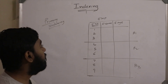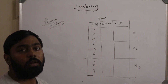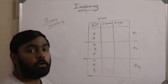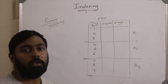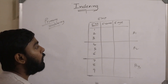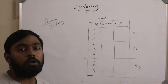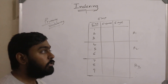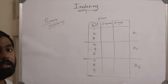In the first video we have seen that indexing can be applied on any key, like a primary key, a candidate key, or a non-key. We also know that a data file can be organized in two fashions: ordered file organization and unordered file organization. In primary indexing, we apply the index on the primary key.